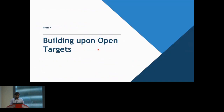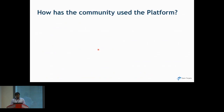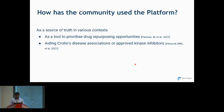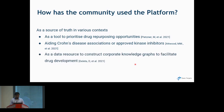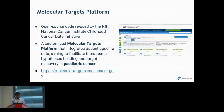OpenTargets has been used as a tool to prioritize drug repurposing opportunities, including in Crohn's disease, as a data resource for constructing knowledge graphs, and for identifying novel drug targets. A great example is the Molecular Targets platform, a customized platform by the National Cancer Institute's Childhood Cancer Data Initiative. This is focused on pediatric cancer, where they took part of the OpenTargets platform and integrated patient-specific data onto it.